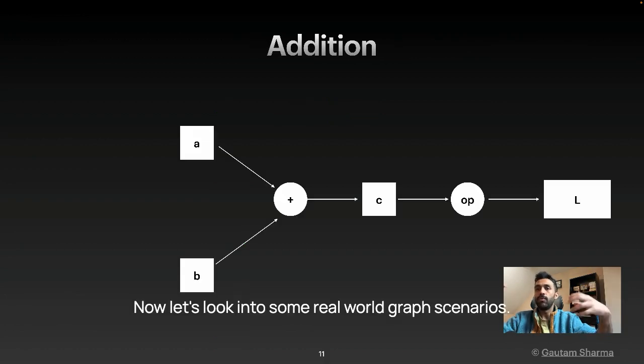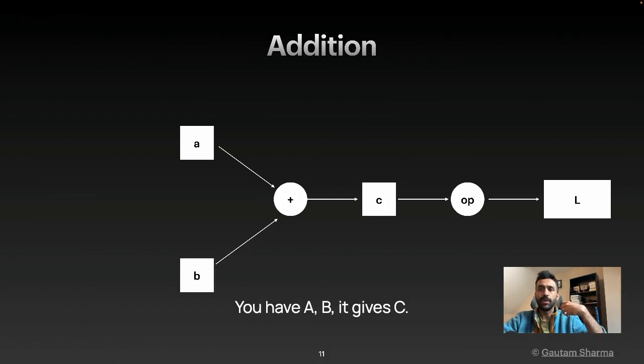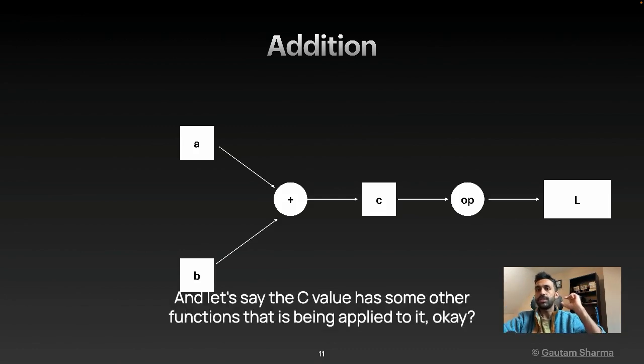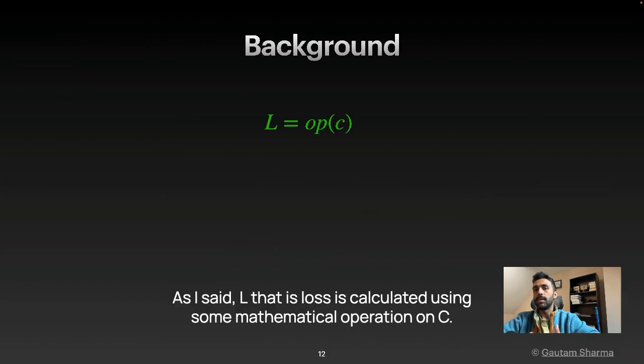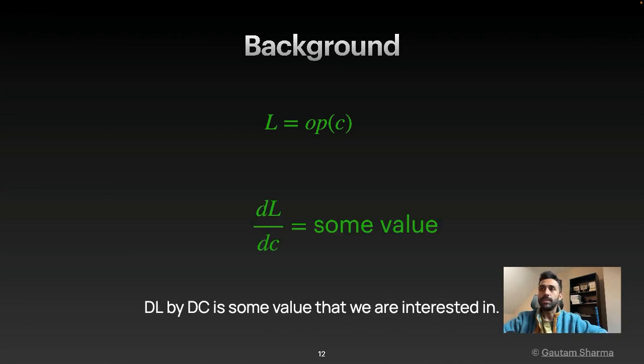Now let's look into some real world graph scenarios. You have A, B, it gives C. And let's say the C value has some other functions that is being applied to it. As I said, L that is loss is calculated using some mathematical operation on C. DL by DC is some value that we are interested in.